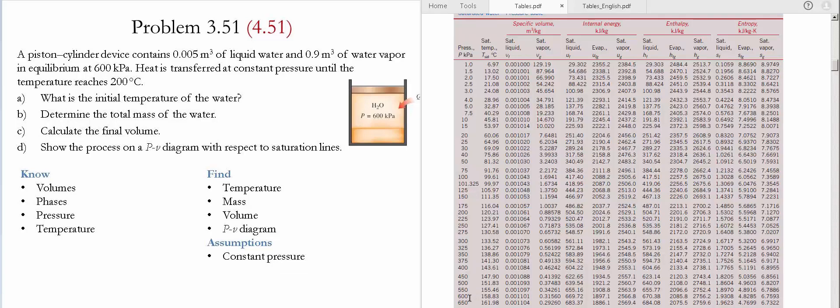For this state, we go to table A5 with the pressure of 600 kilopascals. At this point, the saturated temperature is equal to 158.83, and the given temperature for this state is 200. Since the working temperature is greater than the saturated temperature, it means that we have a superheated vapor. Therefore we have to go to table A6.